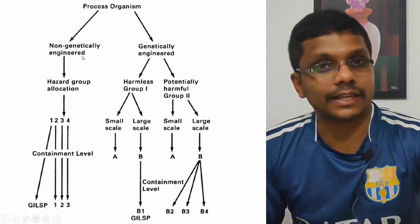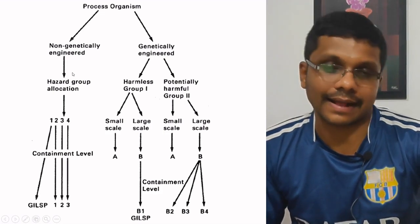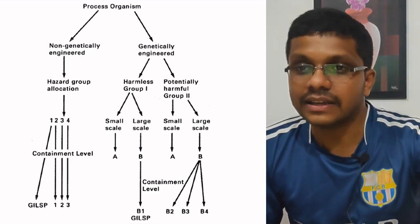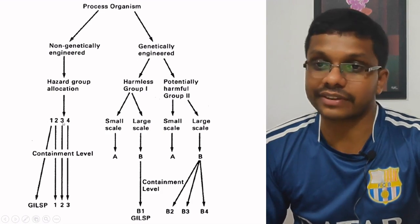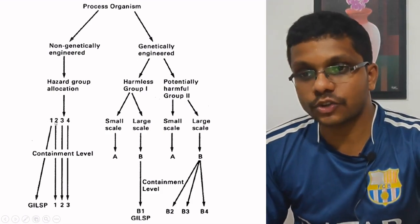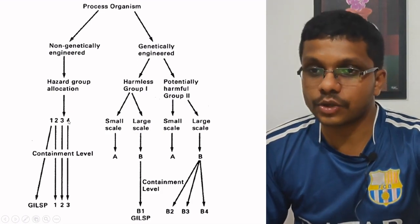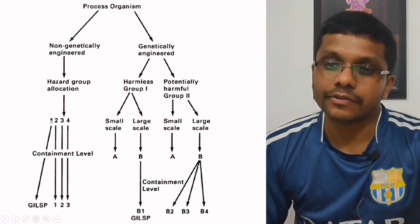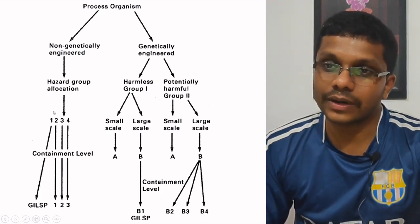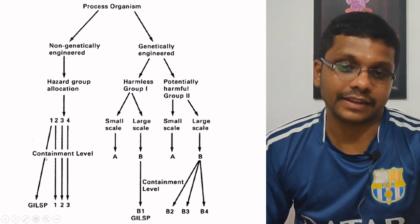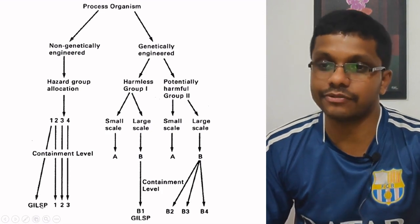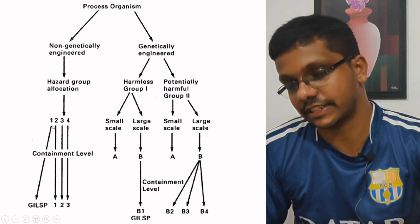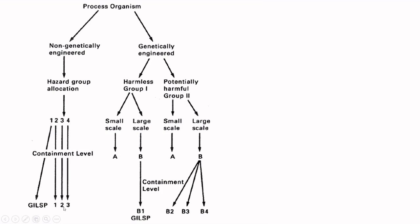If it is a non-genetically engineered organism, we perform a hazard analysis. Based on the factors described, the organism is allocated into four hazard groups: Group 1, 2, 3, and 4, where Group 1 is the least hazardous and Group 4 is the most hazardous. Once we know the hazard group, we recommend the containment level. Hazard Group 1 requires no containment regulation beyond Good Industrial Large-Scale Practices. Hazard Group 2 → Containment Level 1. Hazard Group 3 → Containment Level 2. Hazard Group 4 → Containment Level 3.